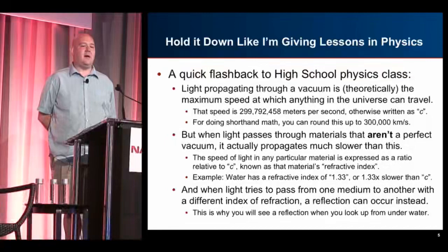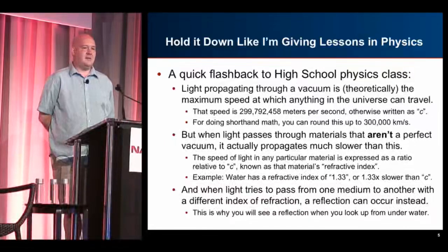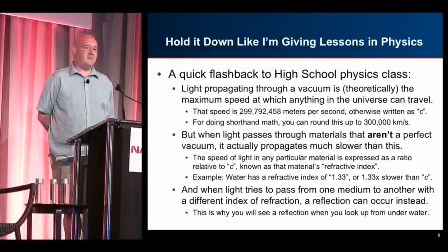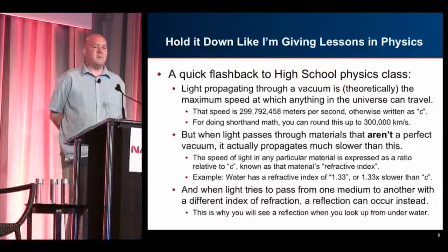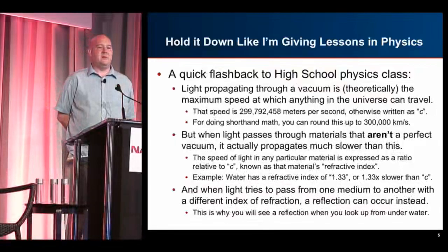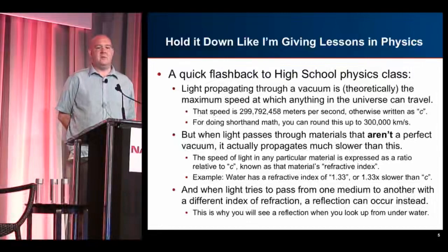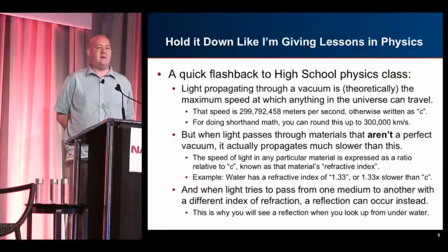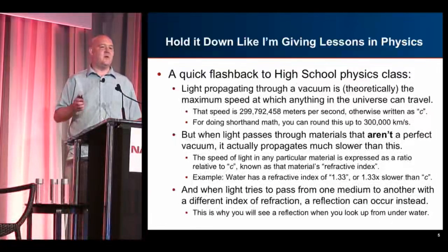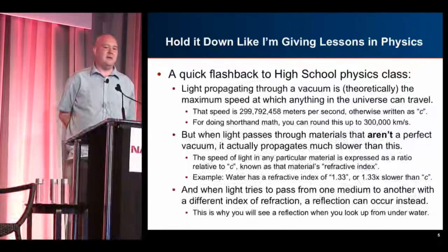A quick physics lesson — flashback to high school. Light propagates through a perfect vacuum at about 300,000 kilometers per second, which we call C. But when light passes through something that's not a perfect vacuum it actually propagates much slower. The speed that light propagates in some material is expressed as a refractive index — a ratio relative to C. As an example, water has a refractive index of 1.33, meaning light travels 1.33 times slower through water than through empty space.